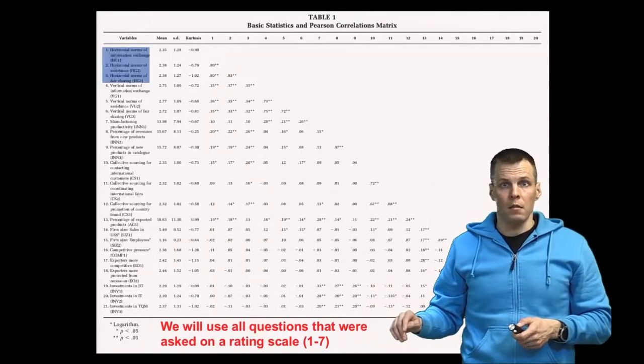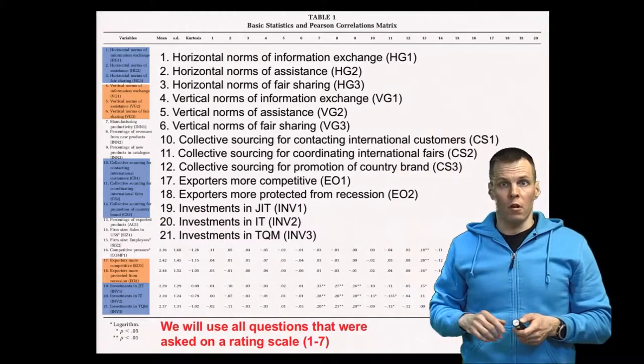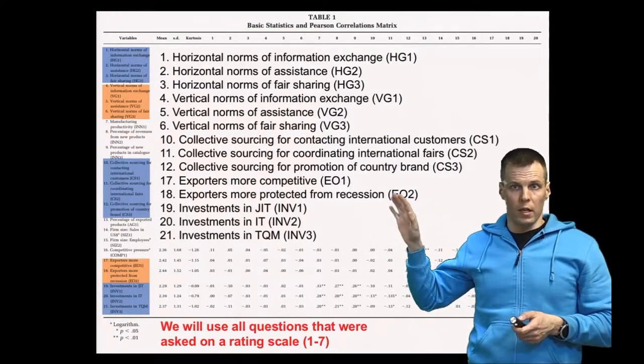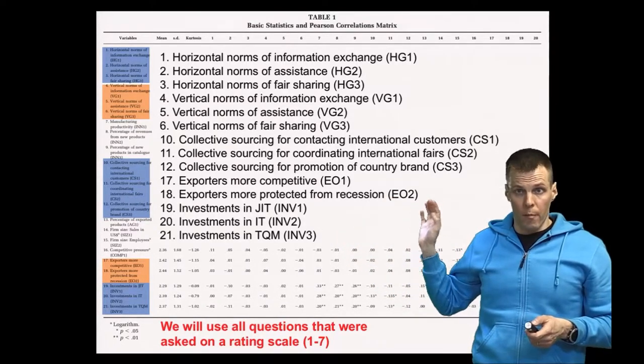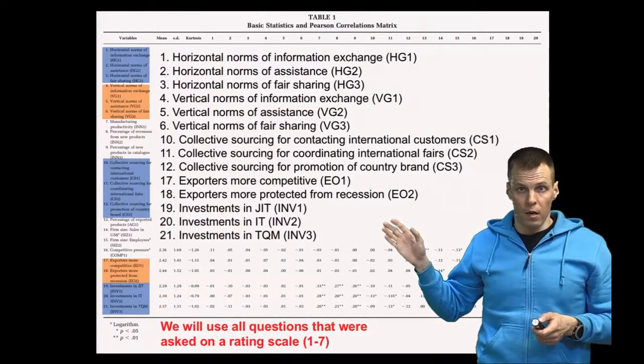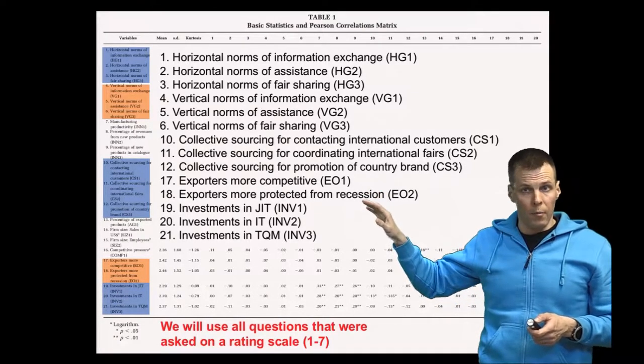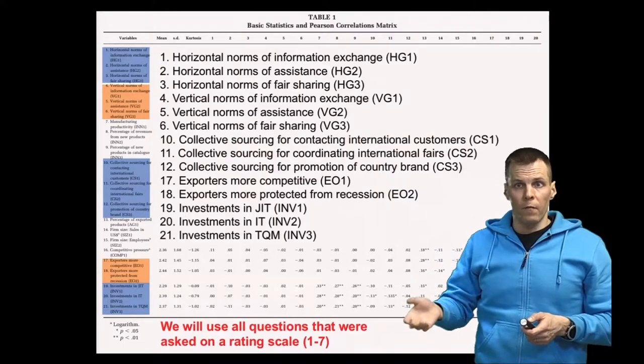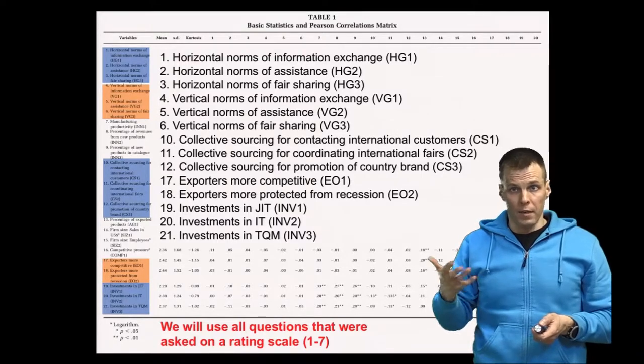So we'll have our five scales: three indicators for horizontal governance, three indicators of vertical governance, three indicators of collective sourcing, two indicators for export orientation, and three indicators for investment. Whether these indicators measure what the authors claim they do measure is a question we will not address in this video. We'll just take a look at whether, for example, these export orientation indicators can be argued to measure something together that is distinct from the other indicators. So we have 14 variables and we want to assess whether they measure five distinct things.